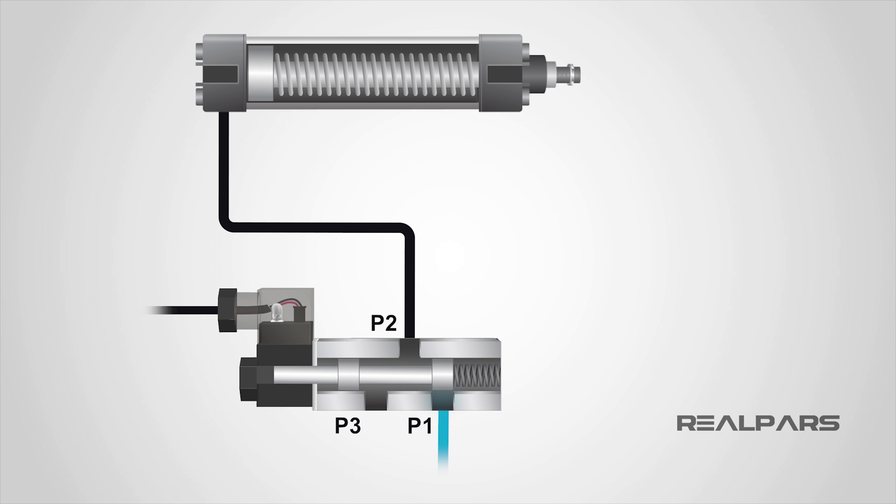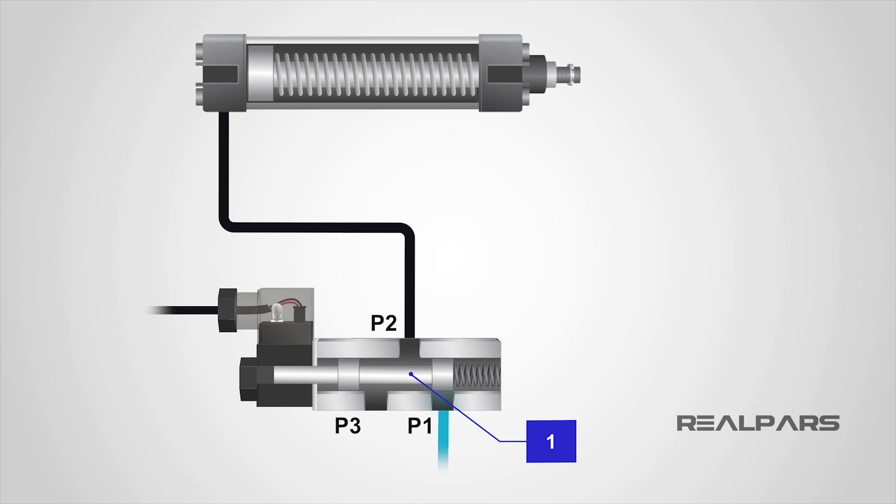In our example, this type of valve would be known as a 3x2 valve, because we have three ports and two spool positions.